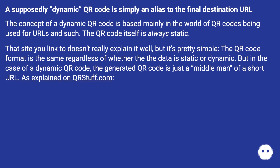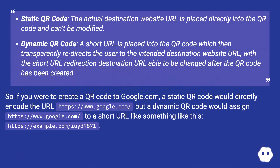As explained on qrstuff.com: Static QR code — the actual destination website URL is placed directly into the QR code and can't be modified. Dynamic QR code — a short URL is placed into the QR code which then transparently redirects the user to the intended destination website URL, with the short URL redirection destination able to be changed after the QR code has been created.